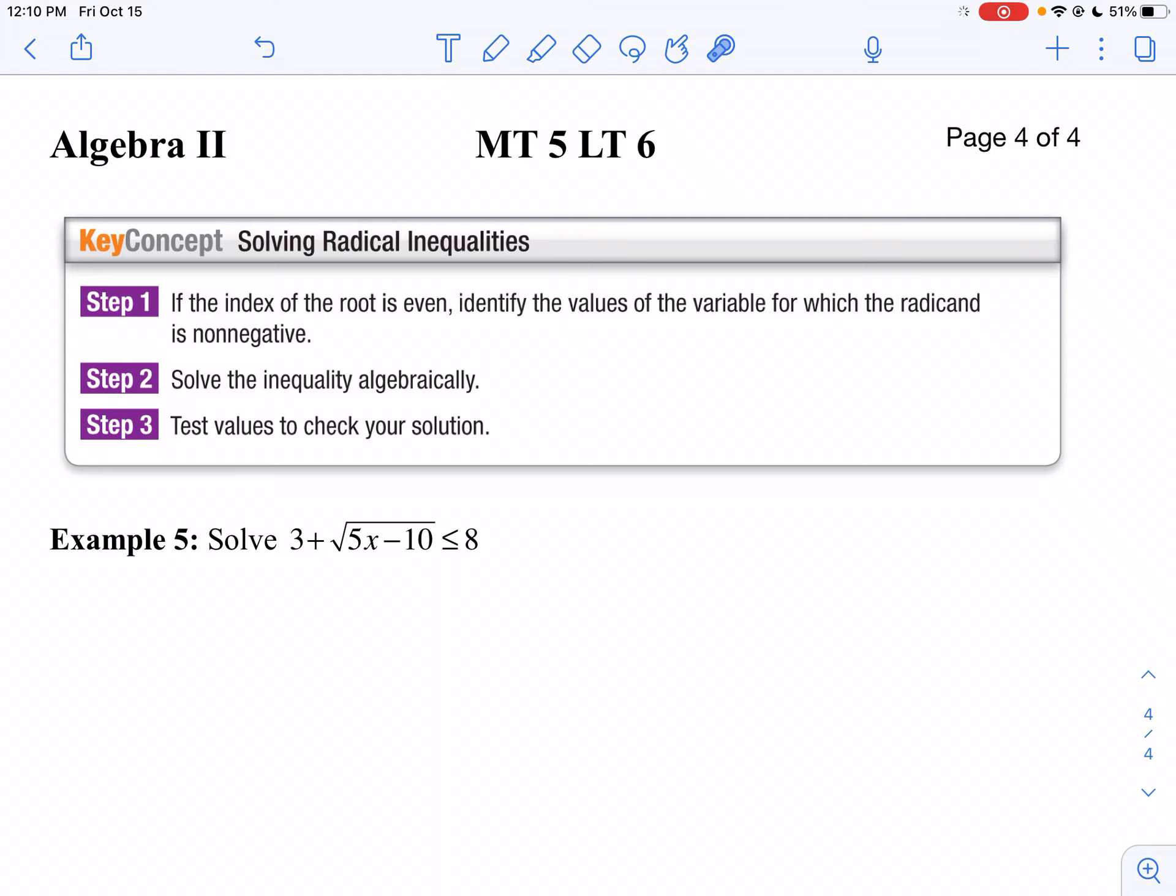Let's take a look at example 5. I've got a square root, so I know 5x minus 10 must be greater than or equal to zero. So 5x would be greater than or equal to 10. Divide both sides by 5. x has to be greater than or equal to 2.